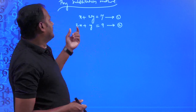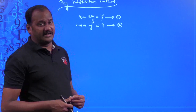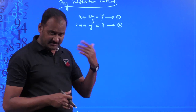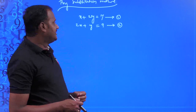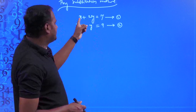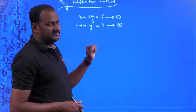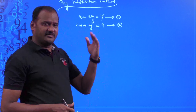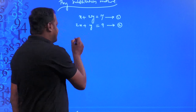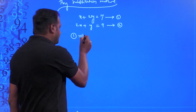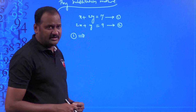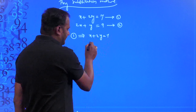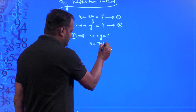Before you find out the value of one variable, ensure that the variable has the smaller coefficient — it is easier to obtain that value in terms of the other variable. In x + 2y = 7, the coefficient of x is 1 and coefficient of y is 2. In 2x + y = 9, the coefficient of x is 2 and coefficient of y is 1. So you can choose either x or y from one of these two equations. I am taking the first equation, where x is alone, so I am going to find the value of x.